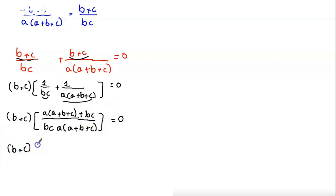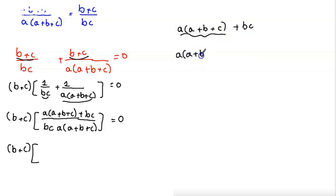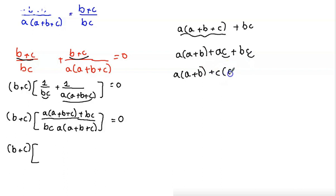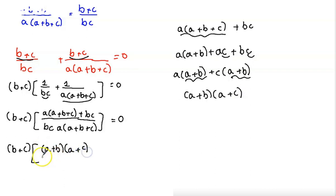Now let's focus on the numerator: a(a+b+c) + bc = a² + ab + ac + bc = a(a+b) + c(a+b) = (a+b)(a+c). So the full expression becomes (b+c)(a+b)(a+c) / [bc·a(a+b+c)] = 0.